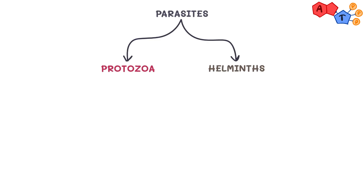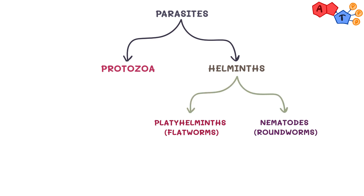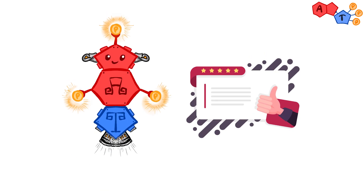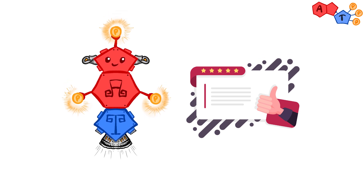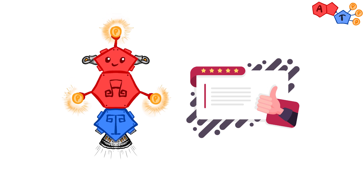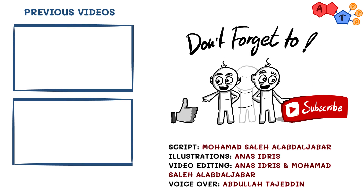To summarize: here's the classification of parasites. We talked previously about protozoa; today we started talking about helminths and divided them into platyhelminths and nematodes. Platyhelminths were the target of today's video, further divided into cestodes and trematodes. In the next video, we will talk about nematodes. We hope you enjoyed this video — let us know what you like or dislike so we can improve. Don't forget to like and subscribe to receive our latest explanations. Thanks for watching.